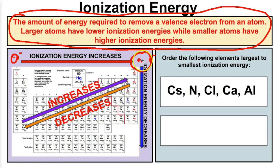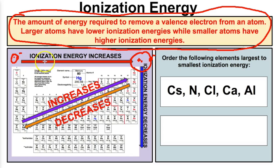Whereas in the larger atom, this valence electron is further away from the nucleus, so the attraction is going to be less and it's going to require less energy to remove this valence electron. So smaller atoms have a tendency to have more ionization energy — it takes more energy to remove the valence electron since it's closer to the nucleus. In larger atoms it doesn't require quite as much energy since the electron is further from the nucleus. Looking at the periodic table, ionization energy increases going from left to right — it takes more energy to remove a valence electron as atoms get smaller going that direction.